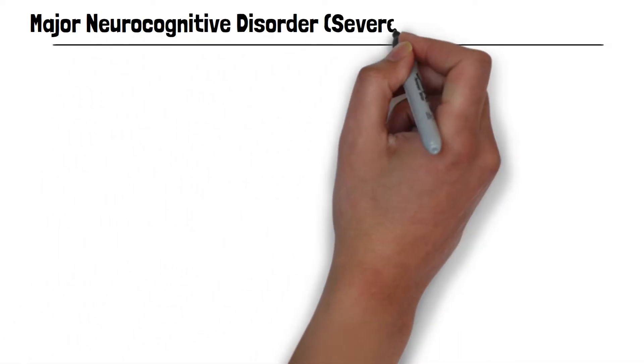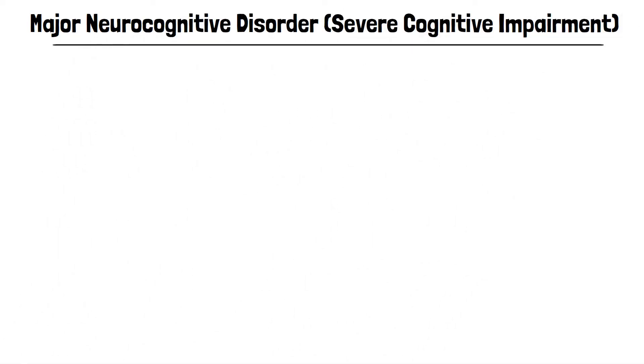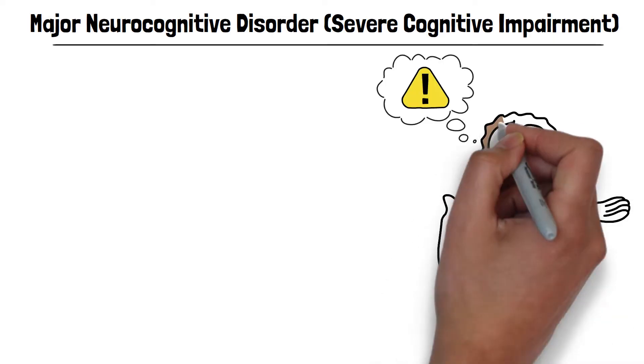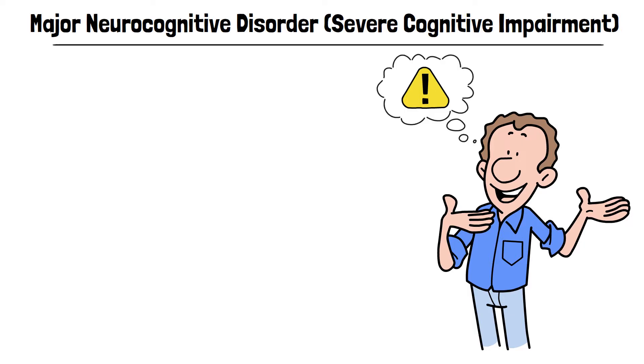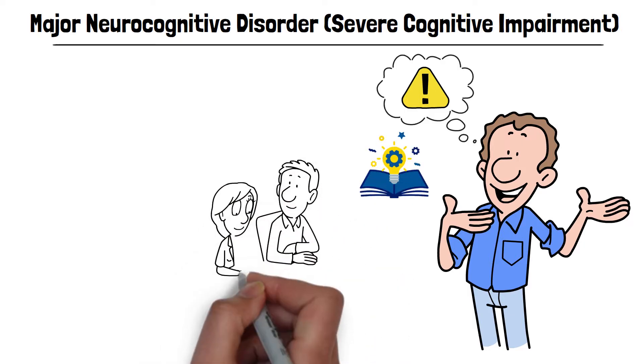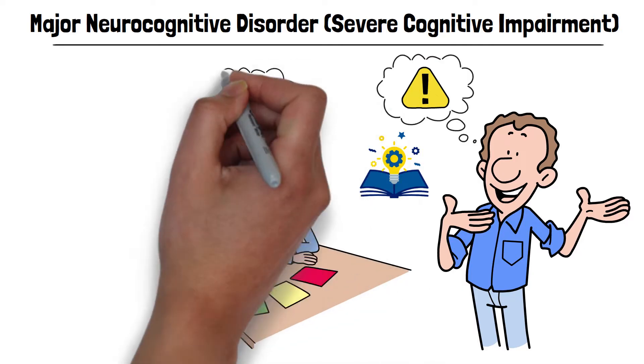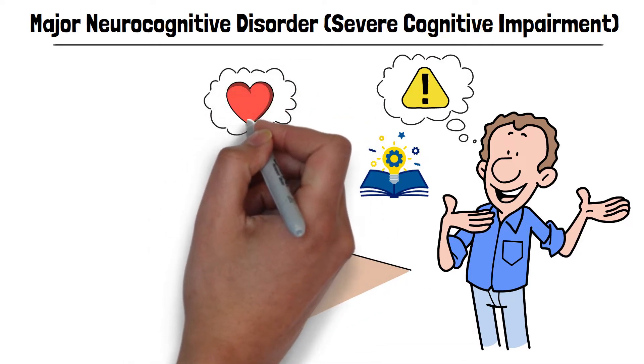Second, major neurocognitive disorder, severe cognitive impairment. In this condition, a person has significant difficulty in performing daily life activities. This includes considerable problems with remembering, understanding, and thinking. Sometimes the person may even have difficulty recognizing their loved ones.